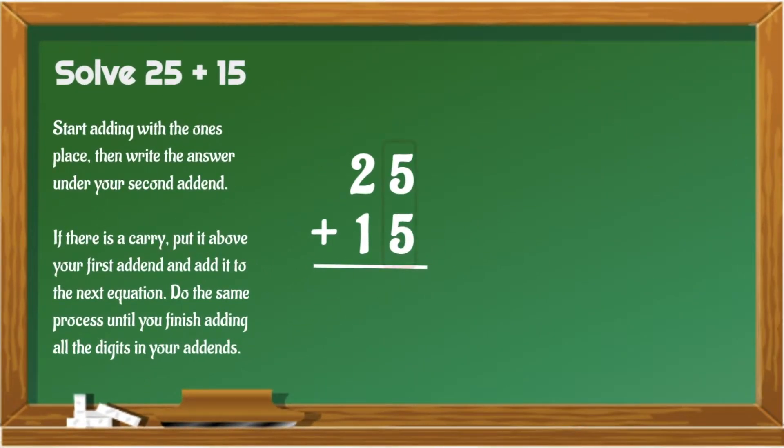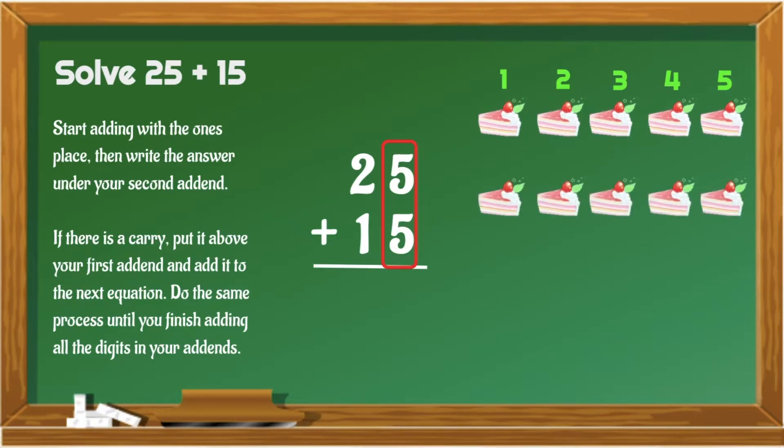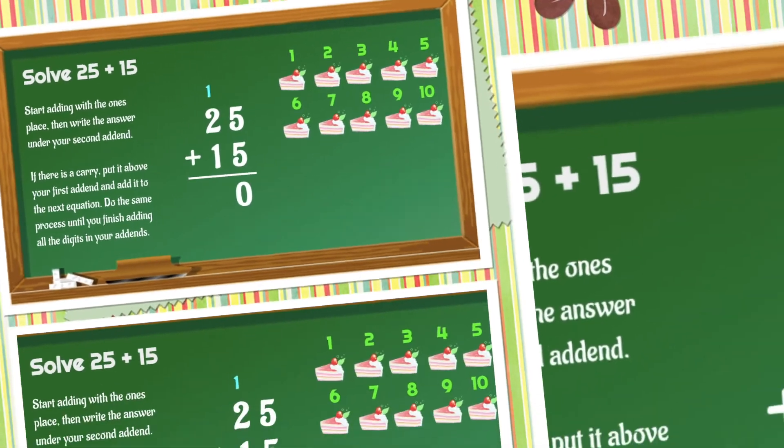Let's start with 5 plus 5. From 5, let's count on. 6, 7, 8, 9, 10. Let's put 0 under 5 and put our carry 1 above 2.